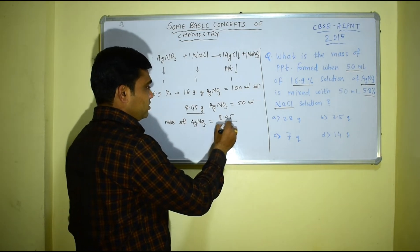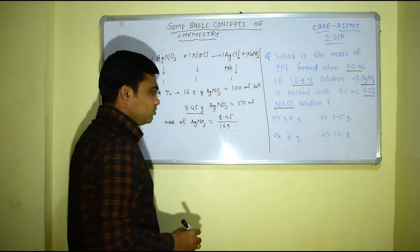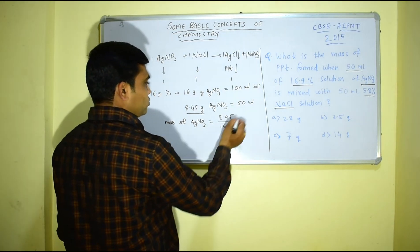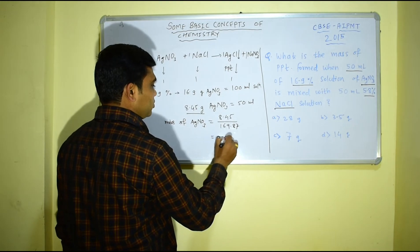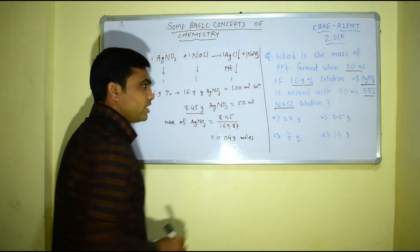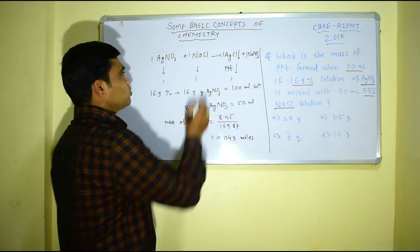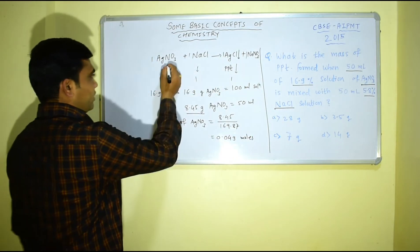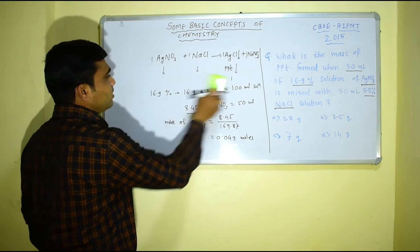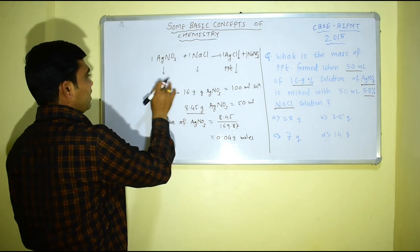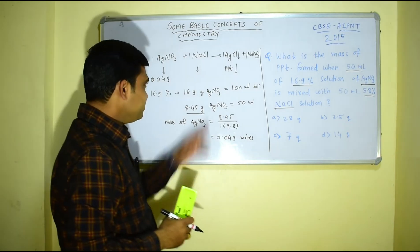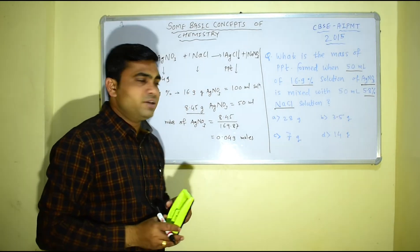Which is silver nitrate, roughly 169.87. So from this you will get 0.049 moles. So I have got moles of silver nitrate, how many moles? 0.049. So let us replace this one by 0.049.